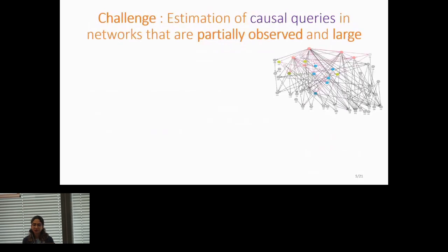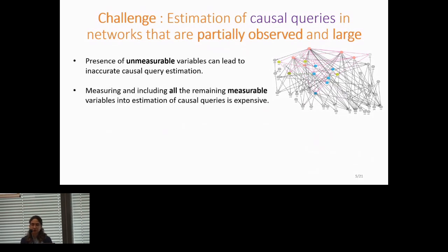The challenge that we face when we want to estimate these types of queries is that when biological networks are partially observed or they are large. Presence of unmeasurable variables in biomolecular networks can lead to inaccurate causal query estimation. And in large networks, measuring and including all the remaining measurable variables into estimation of the query can be really expensive, and it can be computationally intractable, and it can also lead to bias in the estimation.